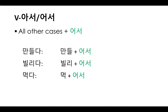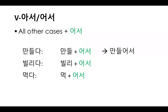For all other verbs — those ending in vowels other than 아 or 오 — you attach 어서. So 만들다, to make — stem 만들, the syllable 들 has a vowel 으, so you attach 어서, making 만들어서.